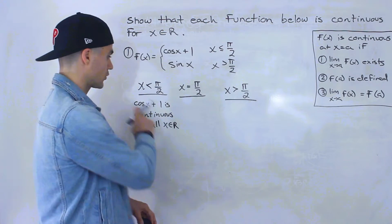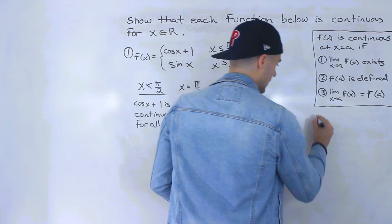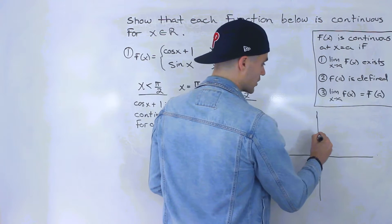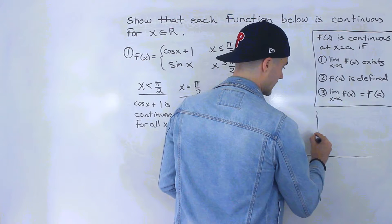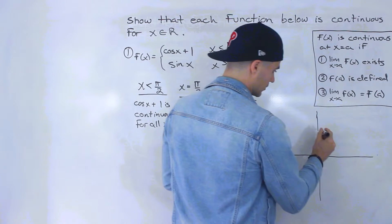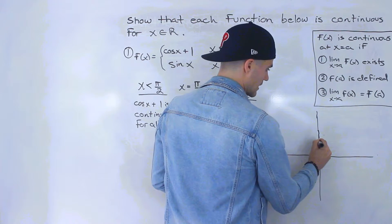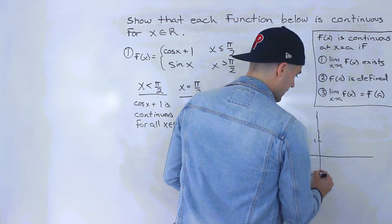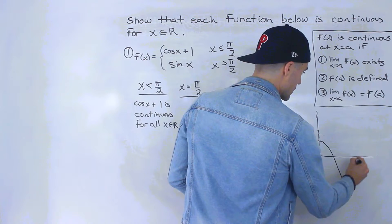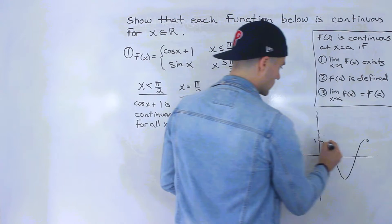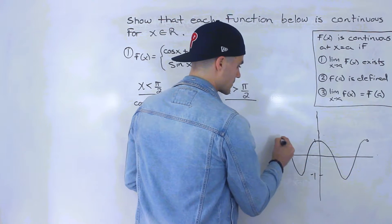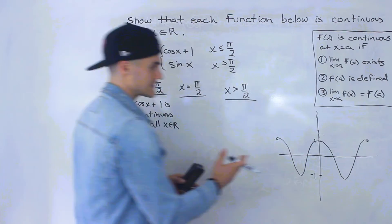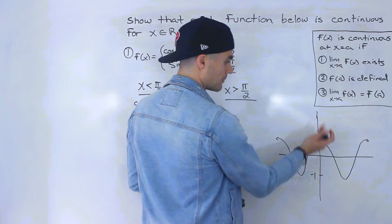Its domain is x∈ℝ. So if we graph cos(x) plus one, it's basically the cos(x) graph shifted up by one unit. The cos(x) graph oscillates between y = 1 and y = −1, and cos(x) plus one is just that wave shifted up by one unit.